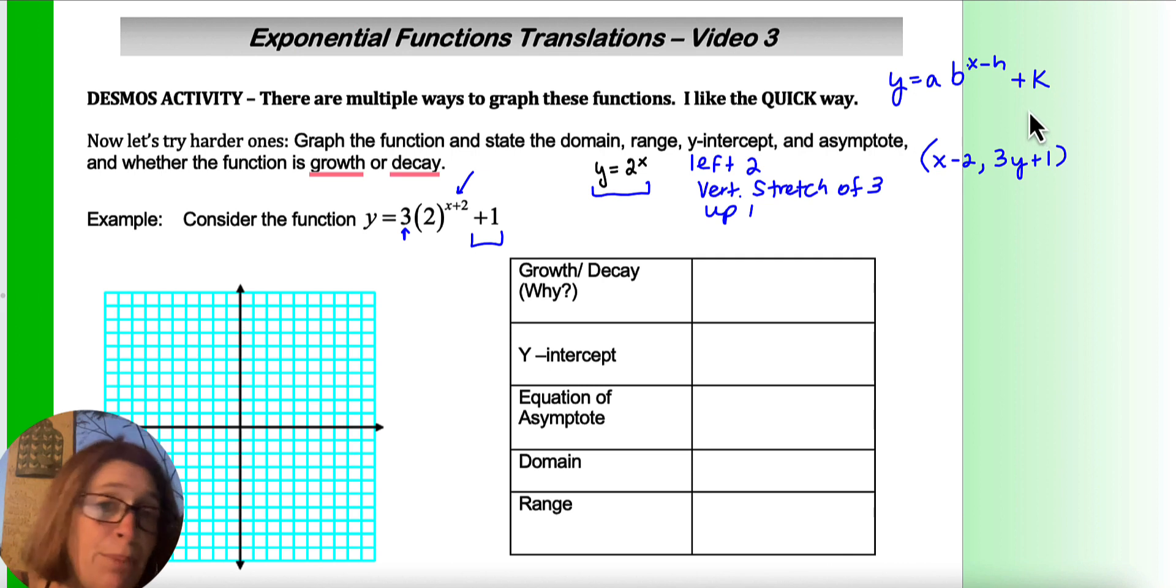For me, I actually just like to plot points. So I make a table because I don't need that many points. I do want to know that the graph is being shifted up 1, so I'm going to put in my horizontal asymptote at y equals 1. And I know, because there's no reflection, that this graph is going to be opening up. So that would be y equals 1 is my asymptote.